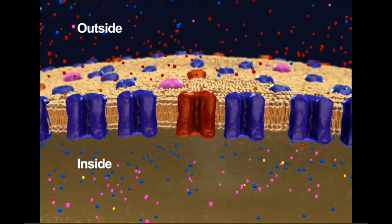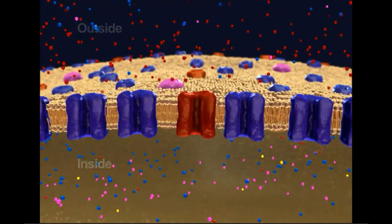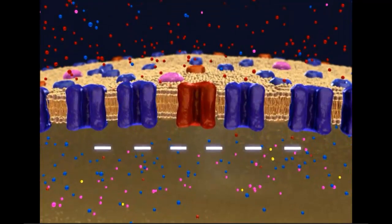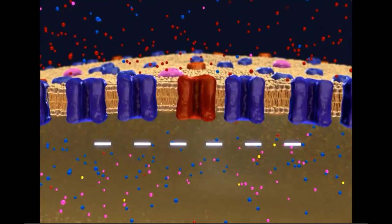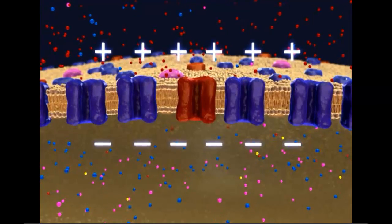Further, a resting neuron has a greater negative charge on the inside surface of the plasma membrane and a greater positive charge on the outside surface.